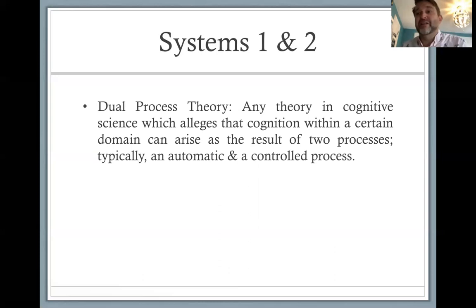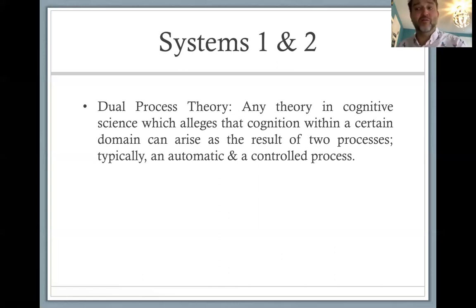Different domains can be nested. We might think of language as a domain, but it also breaks down into parts like recognizing the meanings of words in your native language or recognizing grammatical structures. In any case, dual process theory is any theory in cognitive science which alleges that cognition within a certain domain can arise as a result of two processes, typically an automatic and a controlled process.